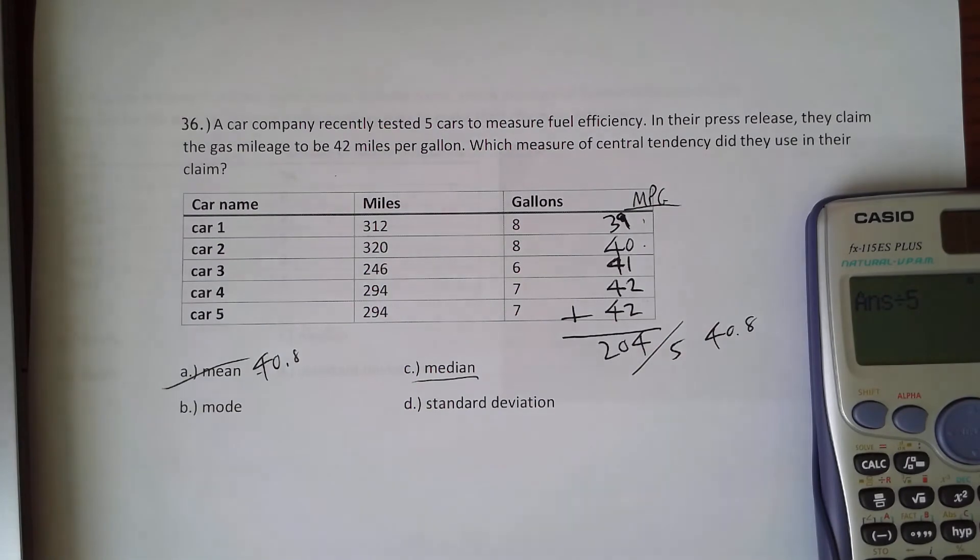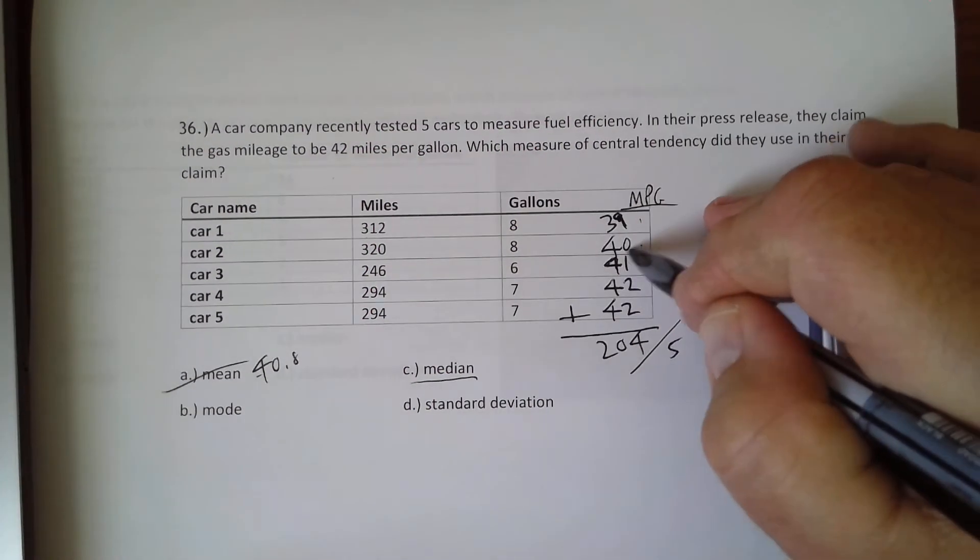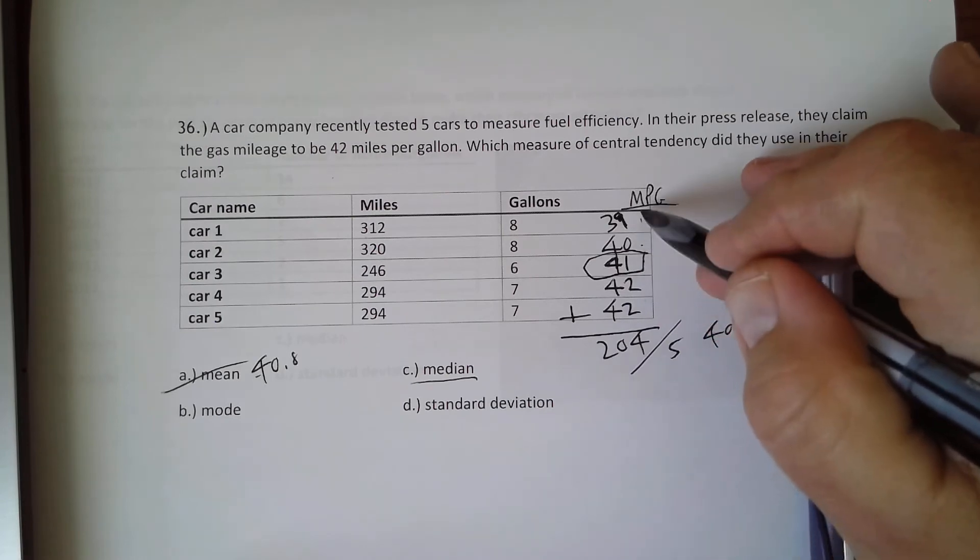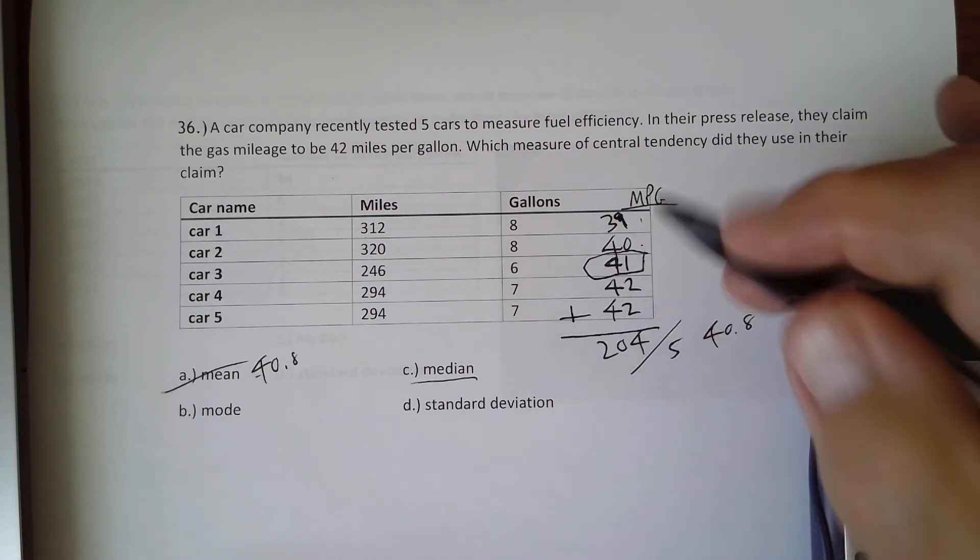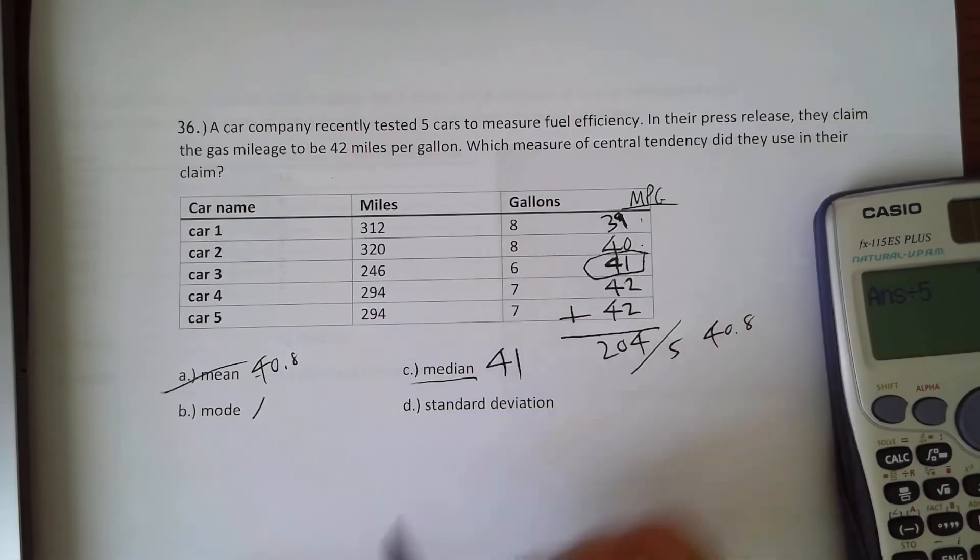We're also lucky that there's an odd number. Since there's an odd number, we just look at the one in the middle. There's two on top, two to the bottom, 41. That's the median, 41. 41 is not 42, so that's not the one they're looking at.